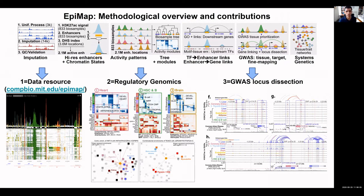He then studied the activity patterns of all those elements, inferred relationships between samples, and identified modules of coordinated activity across all samples. He built links from transcription factors to downstream target enhancers using motif enrichment, and from enhancers to their target genes using correlated activity between RNA and epigenomics. He then integrated all these data with GWAS to infer the tissue, target, and variants underlying traits, and studied interactions between pairs of traits and tissues.